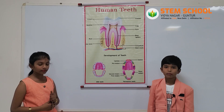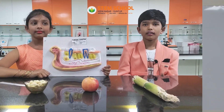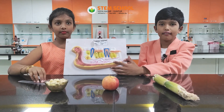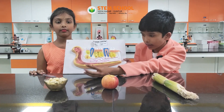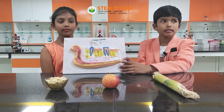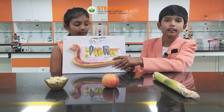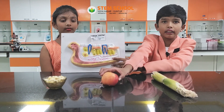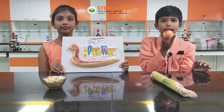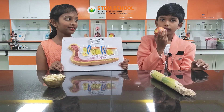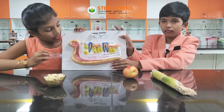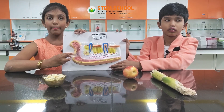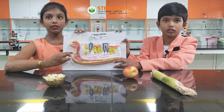Now we will talk about the types of teeth. The types of teeth are categorized into 4 types based on how they look and their function. The first type of teeth is incisors. Incisors are chisel shaped. We have 4 incisors on each jaw. Incisors help us to bite and cut food. Next is canines. Canines are sharp and pointed and are used to tear food.